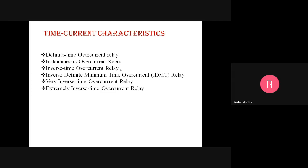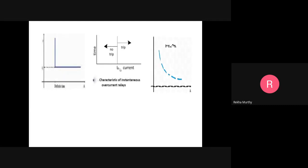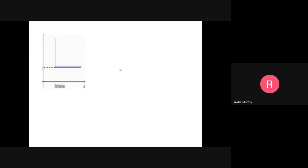In the inverse time overcurrent relay, the time of operation inversely varies with the input current. The characteristic of an electromechanical induction disk relay is very suitable for this overcurrent protection. In this relay, if the fault is more severe, it will be cleared more quickly — that is the inverse time overcurrent relay characteristic.